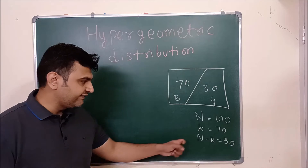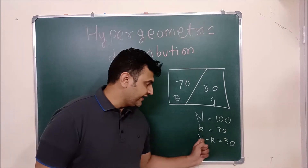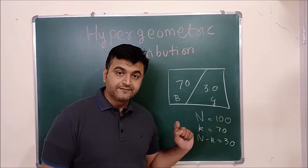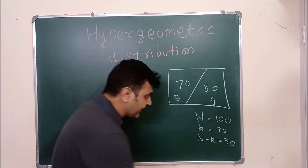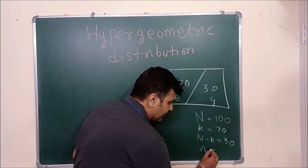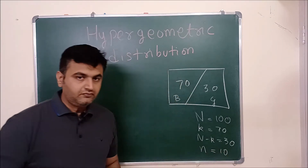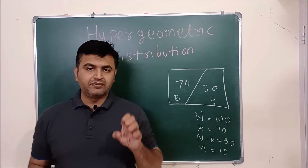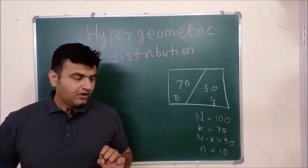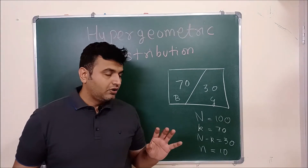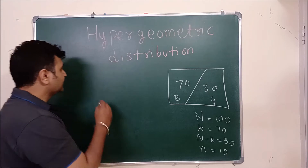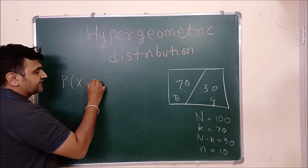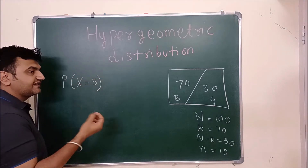I'm calling K as 70 and N minus K as 30 — the number of boys and number of girls. Now suppose I want to take a sample of 10 students. So my sampling consists of 10 students. The question is: what is the probability that exactly three boys are selected?